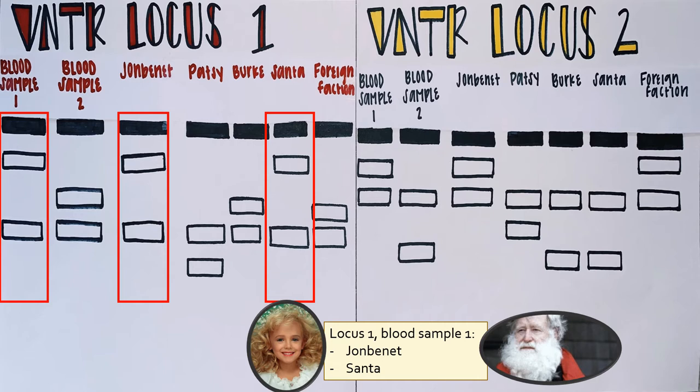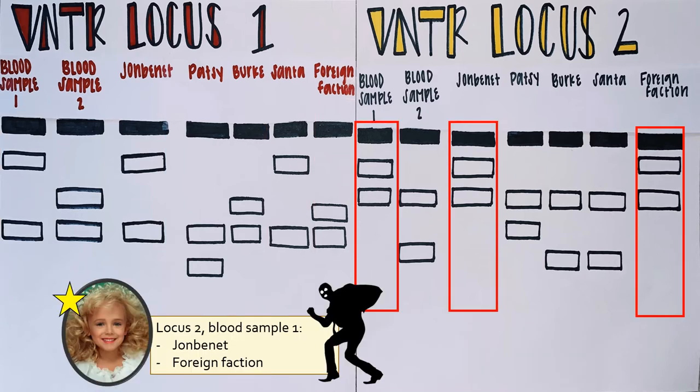Although some bands of these suspects may match our sample, the DNA must match the samples exactly on loci 1 and 2. By observing our second loci, we can see that the banding patterns of blood sample 1 can match the DNA of JonBenet and the foreign faction. Since Santa's DNA does not match the sample in loci 2, we can determine that the blood does not belong to him. Once we are left with the options of JonBenet and the foreign faction, we can remember that the banding patterns of the foreign faction's DNA were not an exact match to the blood sample in loci 1. Since the DNA of blood sample 1 matched the DNA of JonBenet in both loci, we can determine that the blood sample belonged to JonBenet.